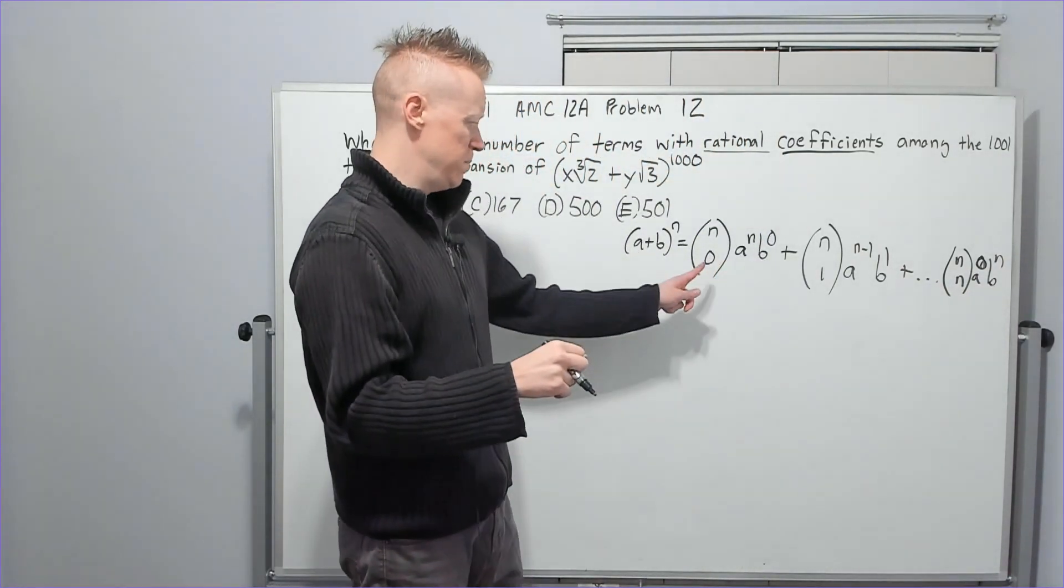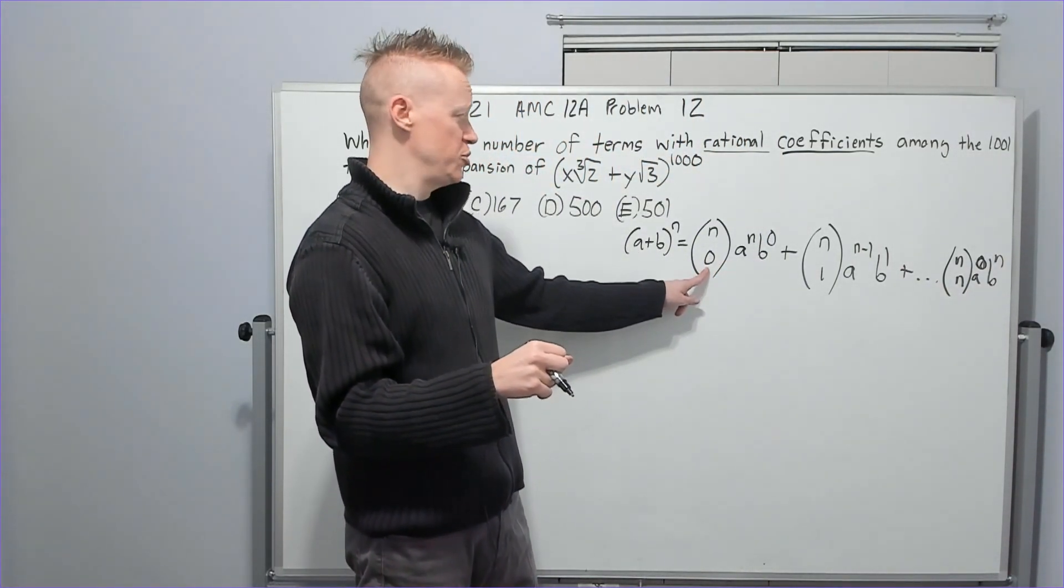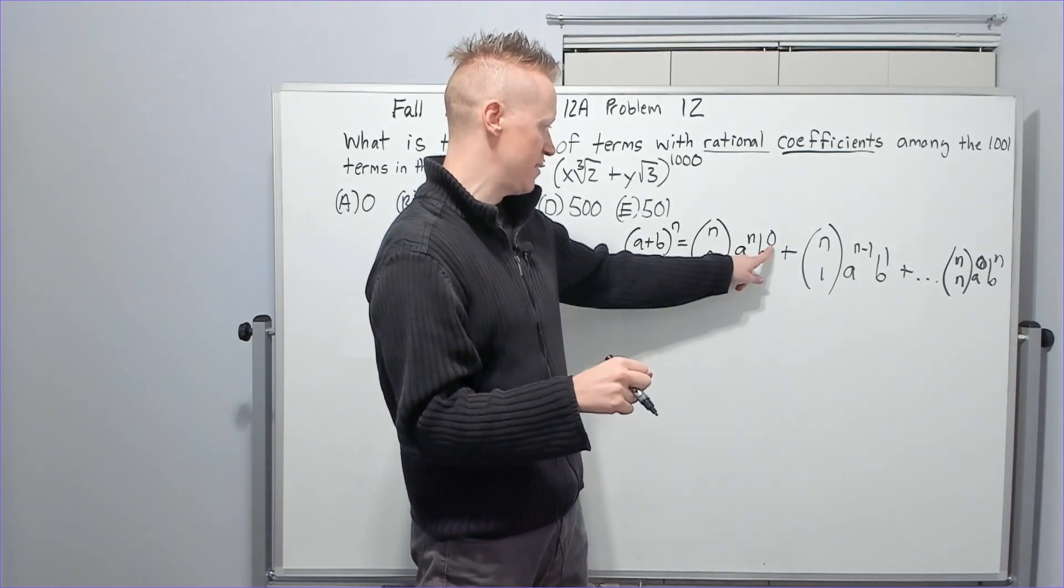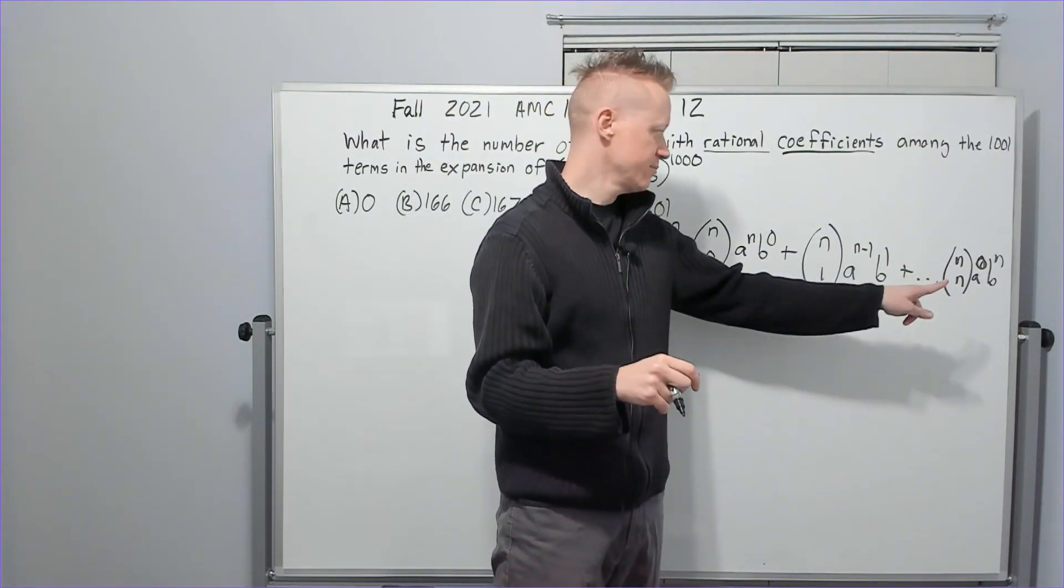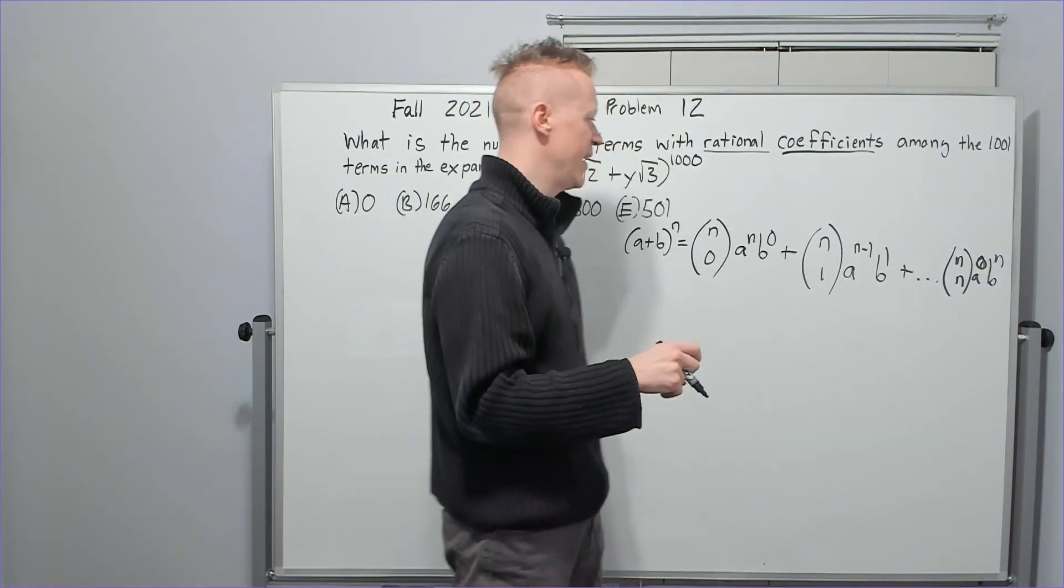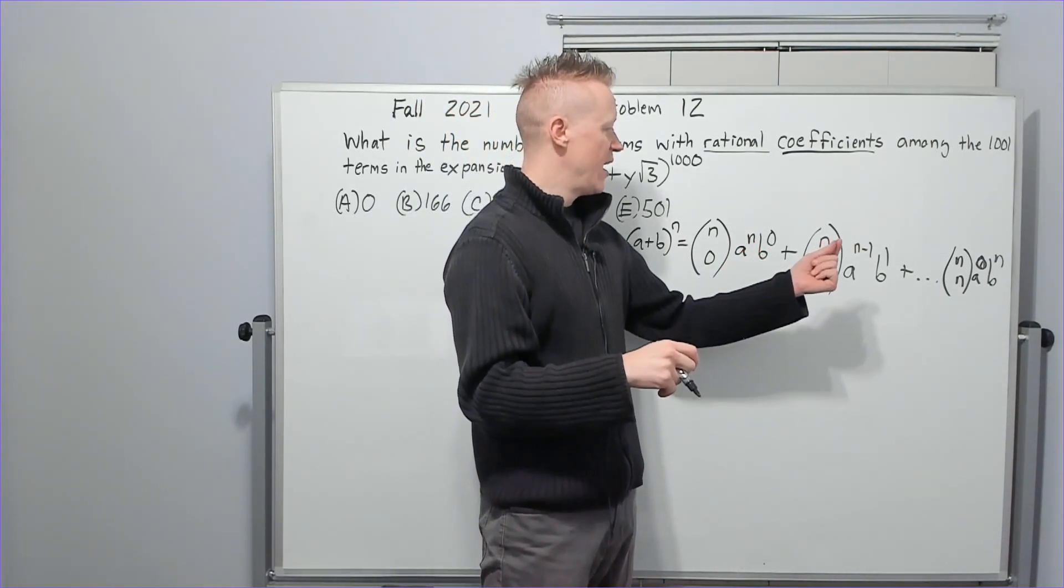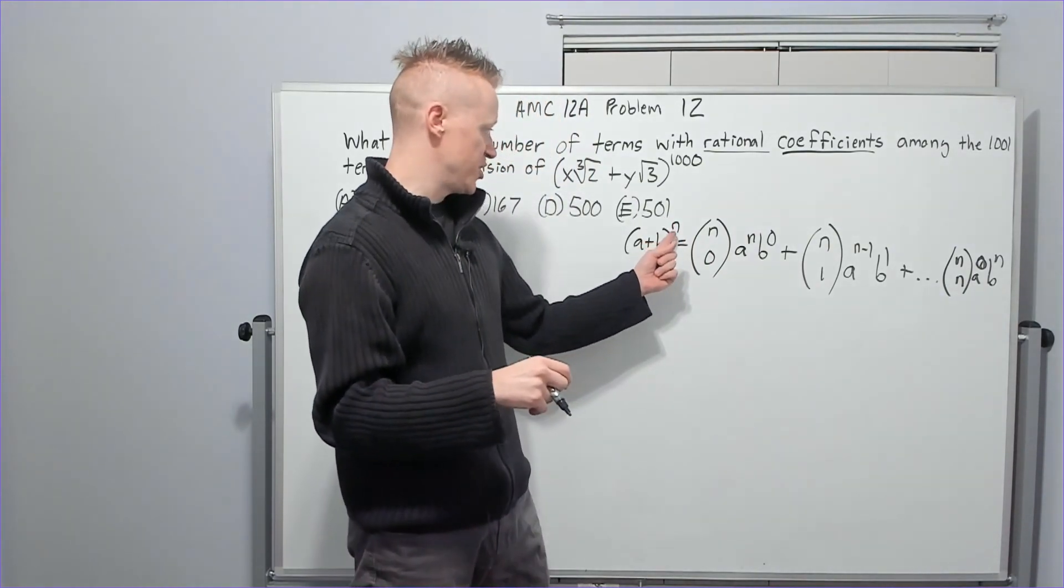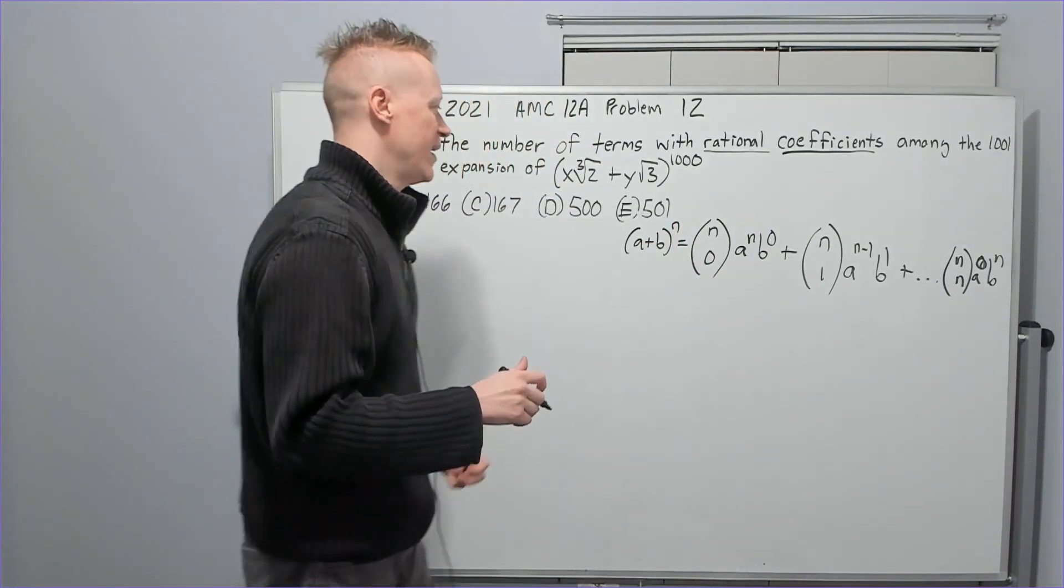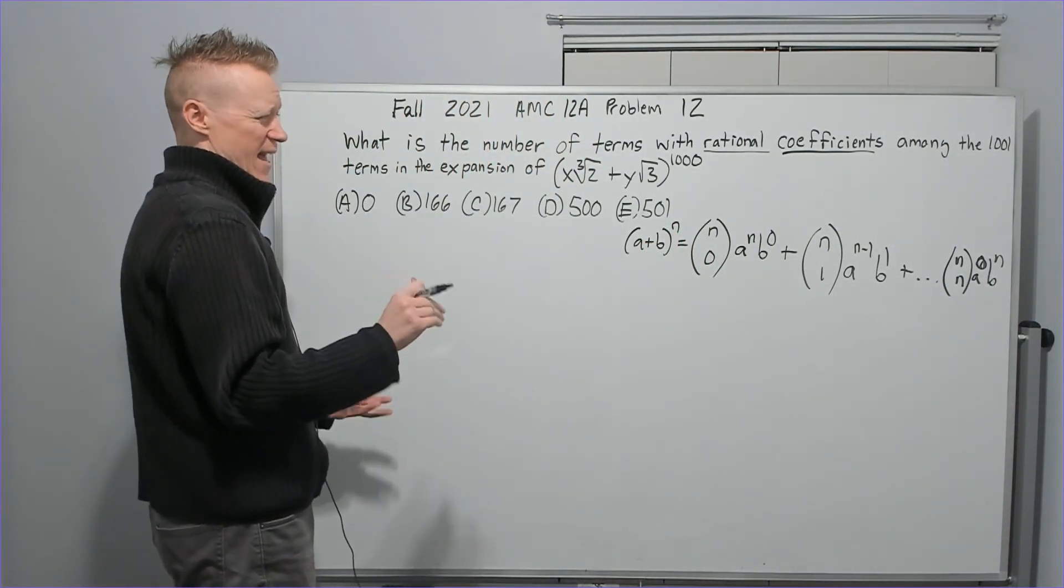Plus N choose 1, and now the A's power will go down by 1, B's will go up by 1, and this will go all the way until you get to N choose N, and it will be A to the 0, B to the N. Now, things to note, the bottom number of the choose is going to be matching the B every time. Okay, so 1 matches 1, the sum of the exponents on these two expressions will always be the original exponent here, N.